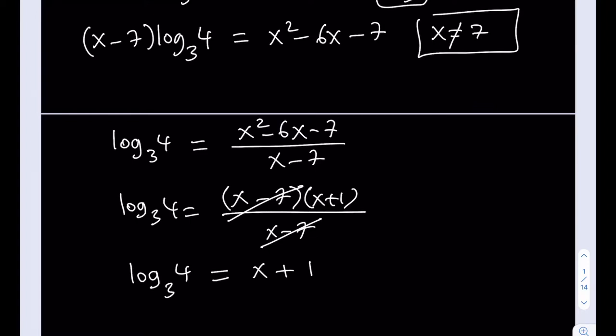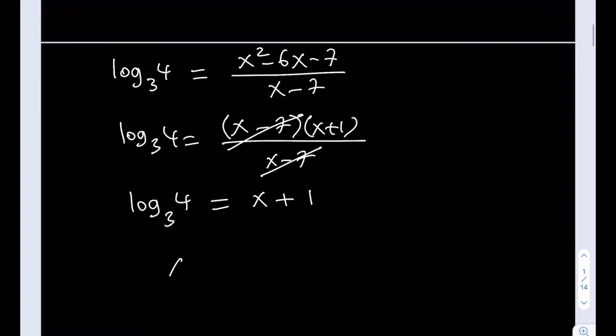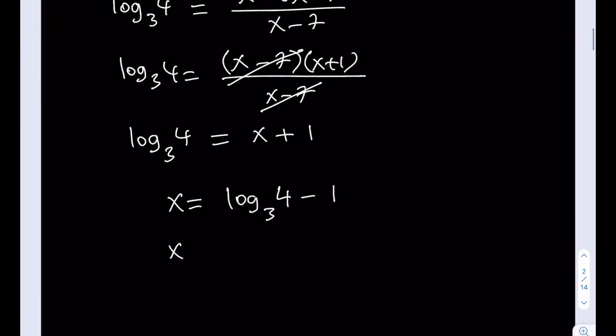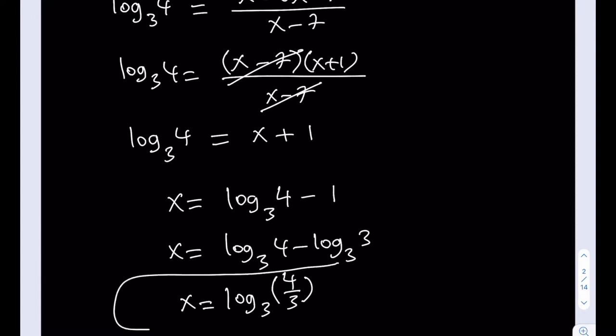Now, remember that we're trying to solve for x here. Therefore, if you just isolate x, you're going to be getting x is equal to log 3, 4, minus 1. And then, obviously, I can just go ahead and write it down in a different way. If you consider the fact that 1 is equal to log 3 with base 3, and then using the quotient property of logarithms, I can just write this as log of 4 thirds with base 3. So that's going to be one of our solutions.